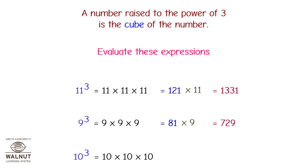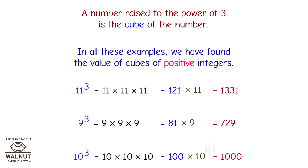10 cube is equal to 10 into 10 into 10. So first, 10 into 10 is equal to 100, and 100 into 10 is equal to 1000. Hence, 10 cube is equal to 1000. In all these examples, we have found the value of cubes of positive integers.